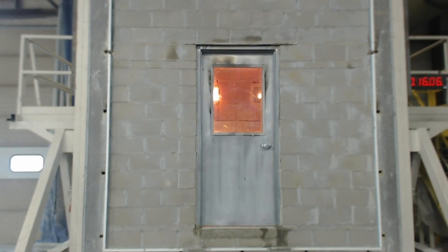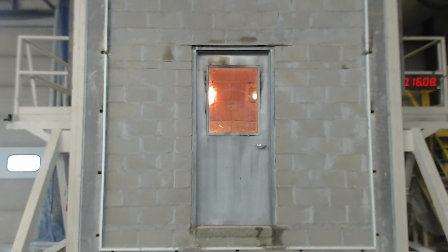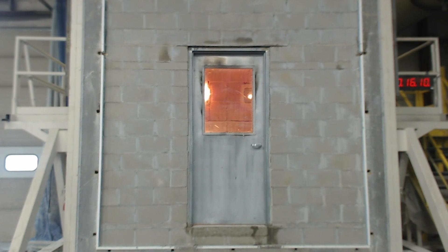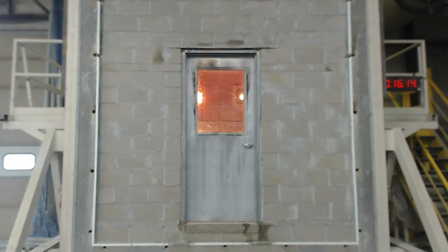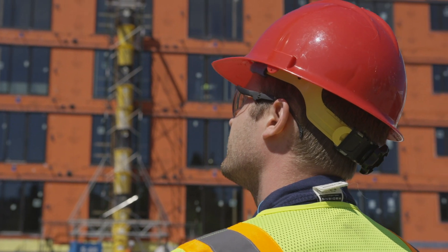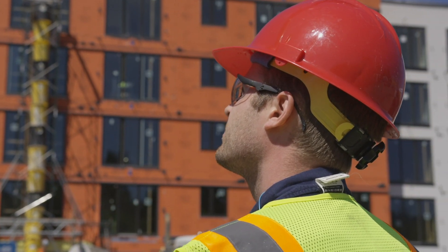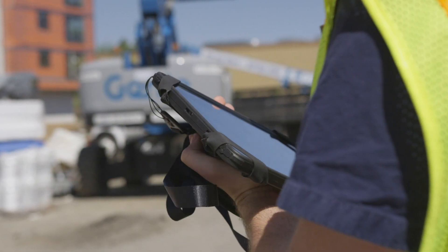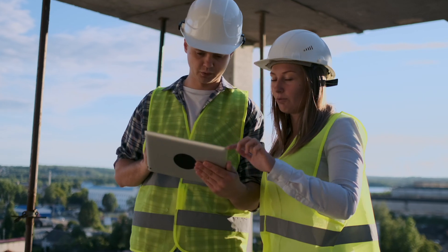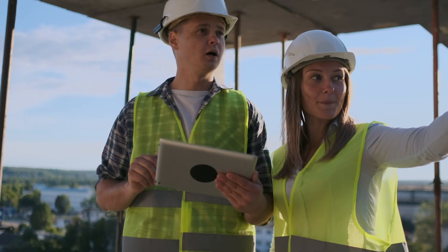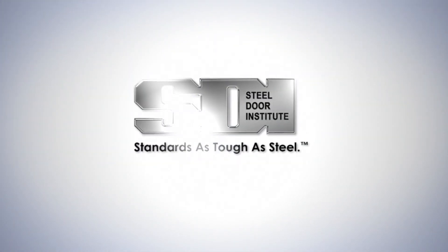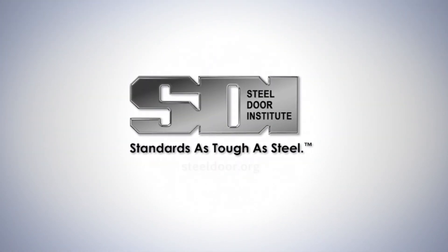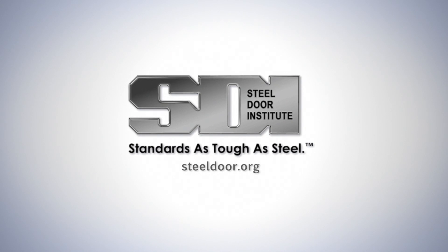Inspecting fire door assemblies will help to ensure that the door, frame, hardware, and glazing are installed properly and will continue to function as intended if a fire occurs. For information about inspections in a particular jurisdiction, refer to the adopted codes. You can also consult the authority having jurisdiction if you have any questions. Visit steeldoor.org for a list of SDI certified manufacturers of fire rated doors and frames.